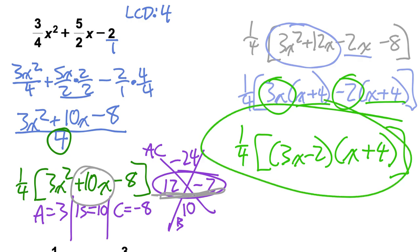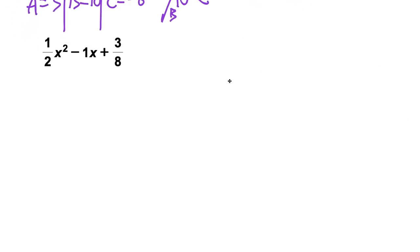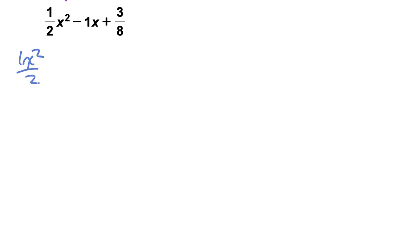You did it, good job. Let's continue. I'm going to get rid of all that stuff. Now we have one where it looks like we have 1x squared over 2 minus, I'm just going to write this as 1x over 1, and then plus 3 over 8.